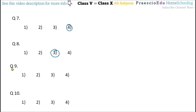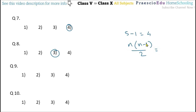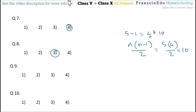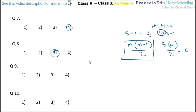Question number nine: how many chords can we draw by joining the points given on the circle? Counting points A, B, C, D, and E — there are five points. Using the formula N multiplied by (N minus 1) divided by 2: five multiplied by four divided by 2 equals 10. Alternatively, the 4th triangular number: 1 plus 2 plus 3 plus 4 equals 10. So 10 is the correct answer, given in option number three.